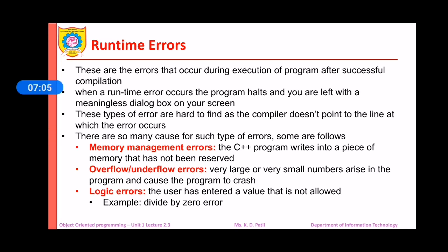Runtime errors are the errors that occur during the execution of the program after a successful compilation. When a runtime error occurs, the program halts and we are left with a meaningless dialog box on our screen. You may have observed the segmentation fault error — it will not occur during compilation, but when we run our program and have a mistake in our algorithm, the segmentation fault may occur. Runtime errors are very hard to identify because the compiler does not point to the line at which the error occurs.